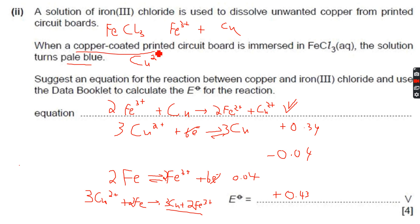So we are actually carrying out what is supposed to be done, because when a copper-coated printed circuit board is immersed in FeCl₃, this means Cu is added to FeCl₃. A pale blue solution is formed, meaning Cu²⁺ is formed. But in this case Cu²⁺ is reacting, which is not possible.